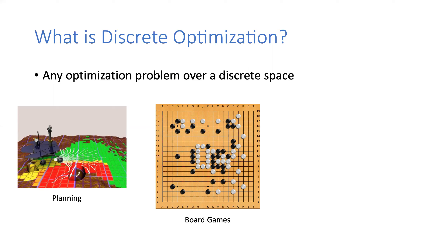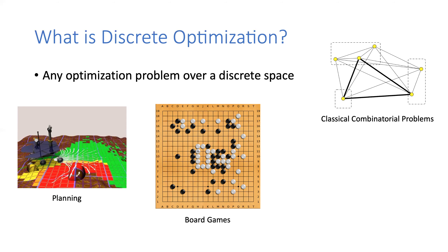In the middle, you have a board game, Go. In board games, you have to make a discrete choice of what your next move is. You can't model this as a continuous action space because the actual game moves are very discrete — not continuous nor differentiable. You also have classical combinatorial optimization — in this case, the traveling salesperson — where you have to commit to a tour over the vertices in a graph, and that is a discrete choice.